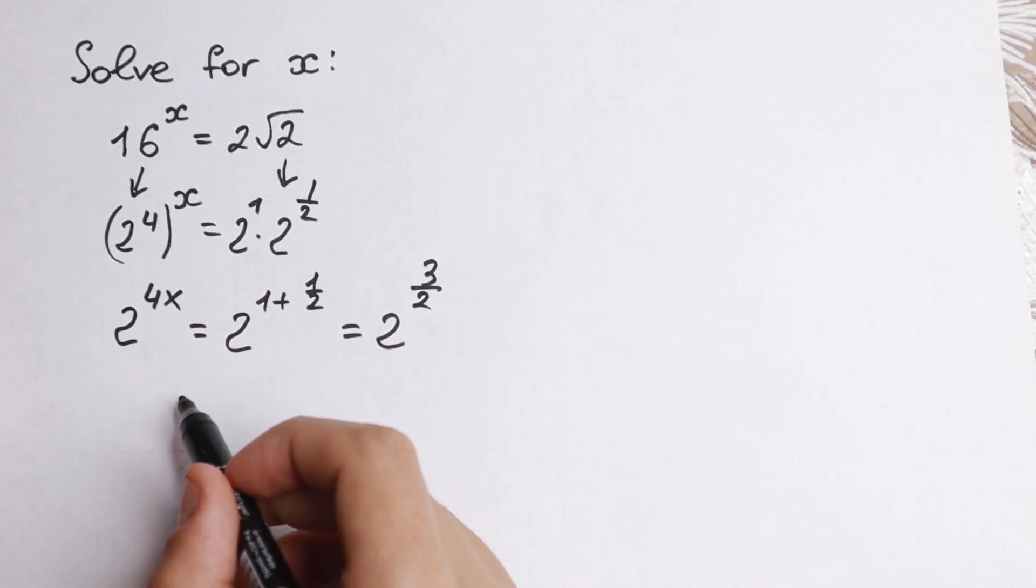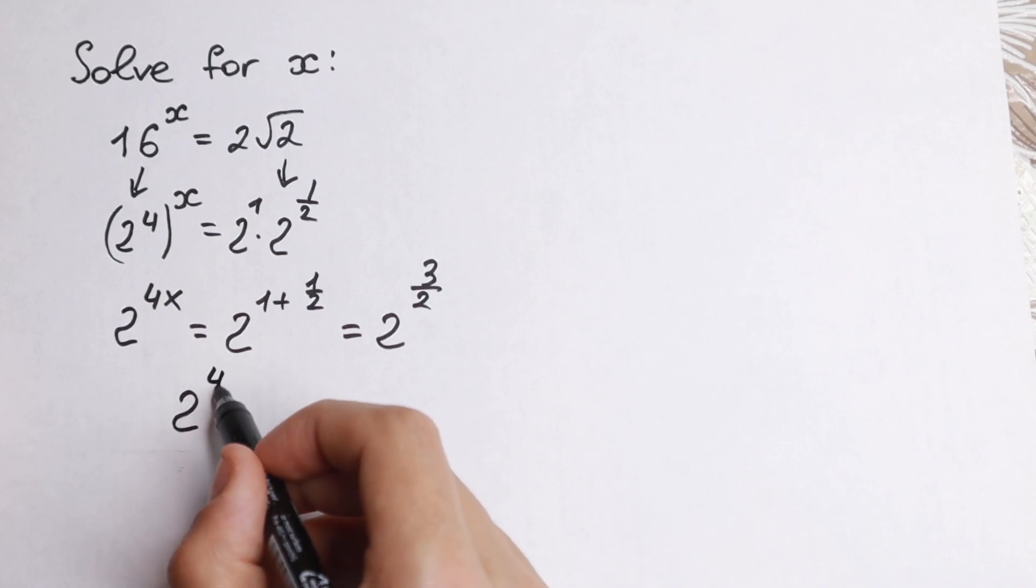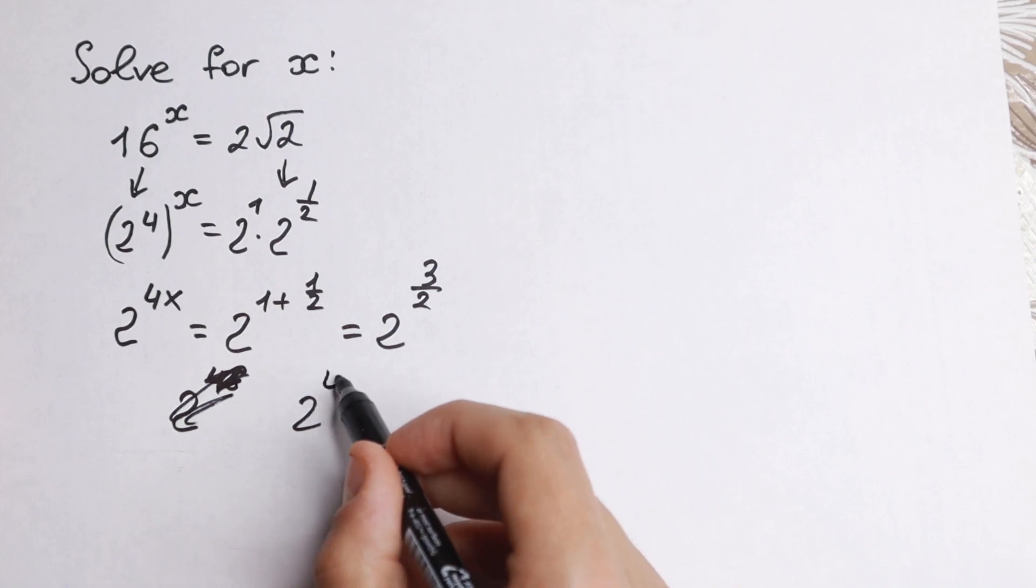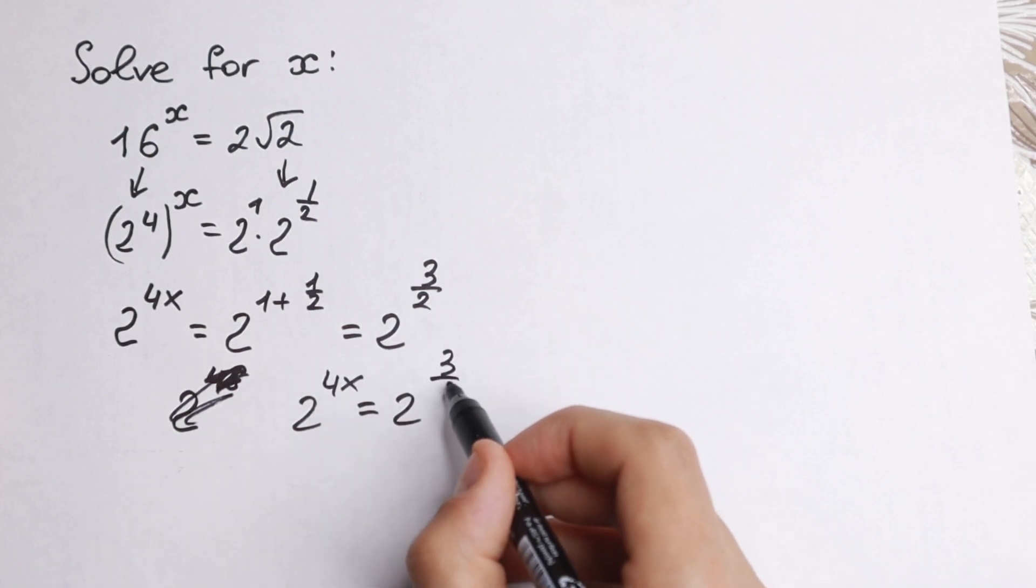And moreover, this is a classic, the easiest exponential equation. This is 4x. 2 to the power 4x equal to 2 to the power 3 half.